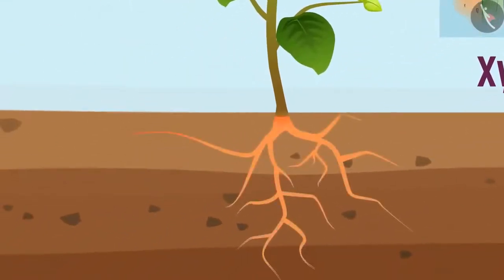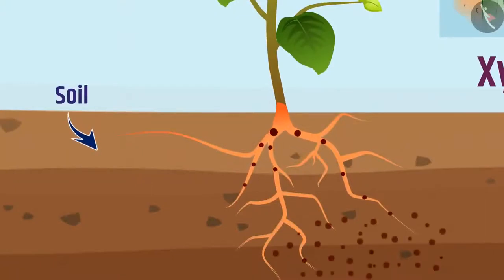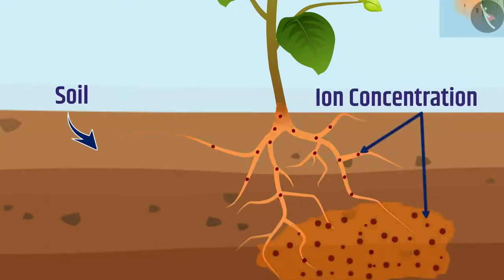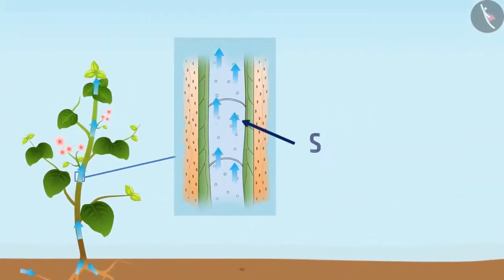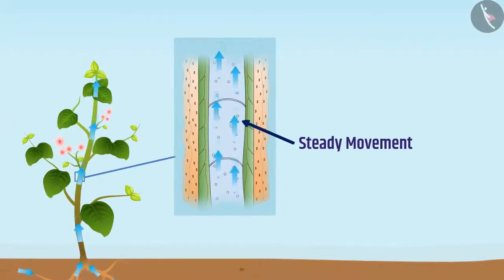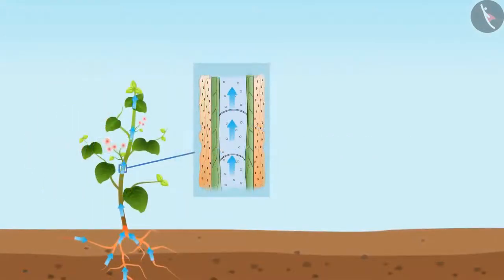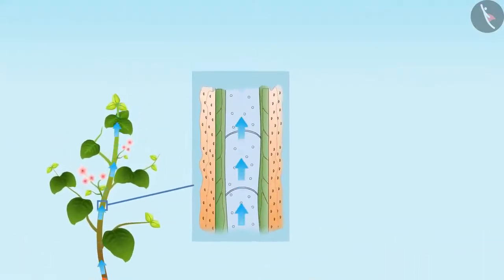Root cells actively absorb ions from the soil. Due to this, there is formation of different ion concentration between roots and soil. To remove this difference, water enters the roots from the soil and enters the xylem. Due to steady movement of water in xylem, it creates a column of water which is pushed upward to some height. The pressure developed by the cells of the roots through which water rises upward in the xylem vessel is called root pressure.